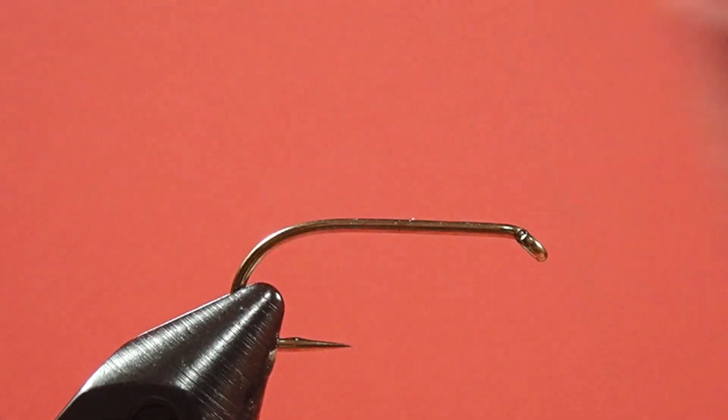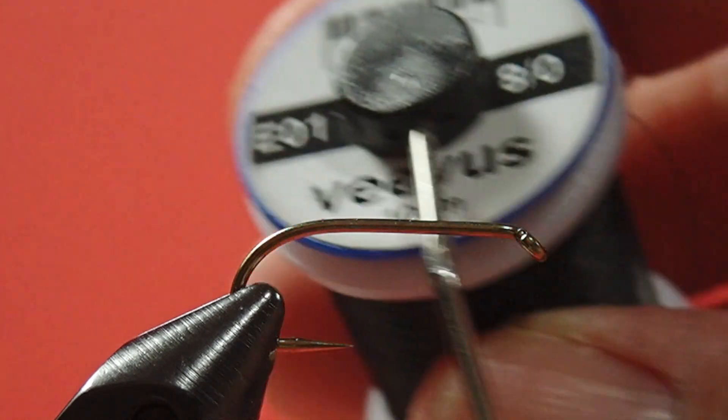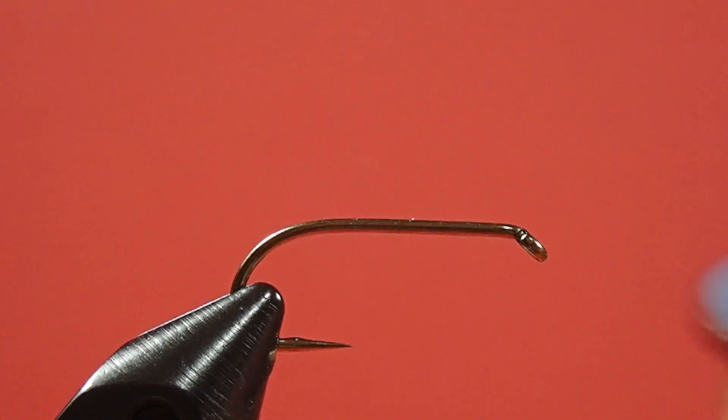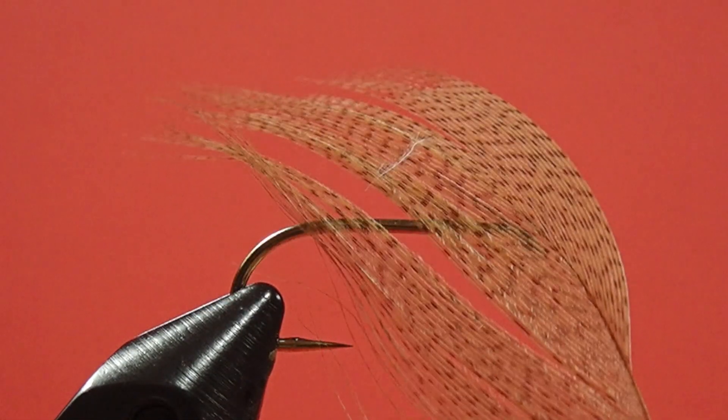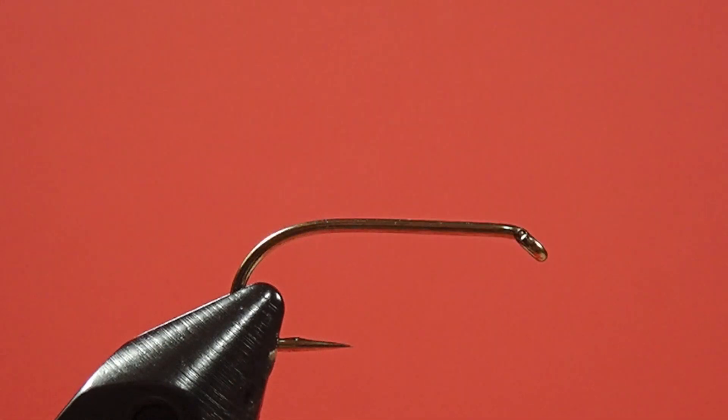Our hook is a size 8 heavy wet fly hook. We're using ADOT black thread. We're going to use small gold tinsel, red floss for the body. Our throat is going to be blue dun, and brown mallard for the wing.